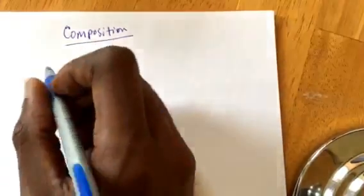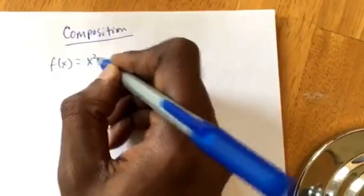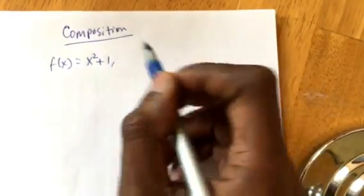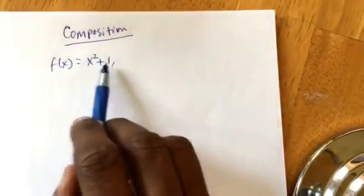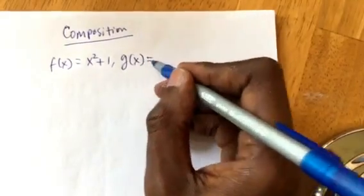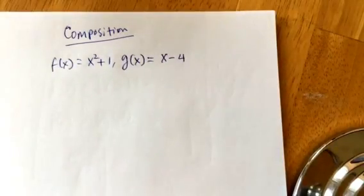Hello everyone, here is a quick video on composition functions. Composition is basically a function inside another function. So here you have a function f of x equals x squared plus 1, and let's say you have another function g of x equals x minus 4.